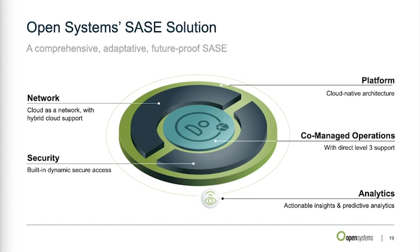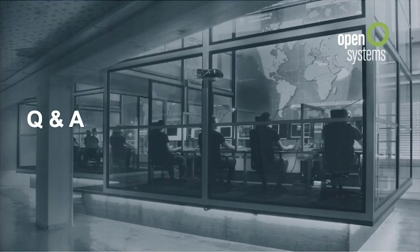The most important piece is co-managed operations. Managing such a huge complexity and dynamic environment needs a good partner — you need access to engineers that can help you. We all struggle with talent and know-how today, so having access to Level 3 support to help you in connecting and securing your applications is really a core competency of ours. We've received very positive feedback from customers on how we helped them master these challenging times around COVID-19.